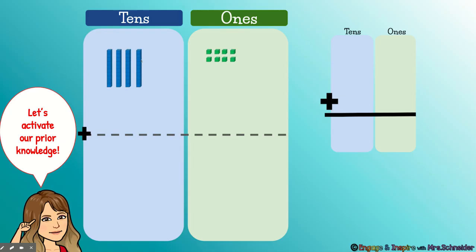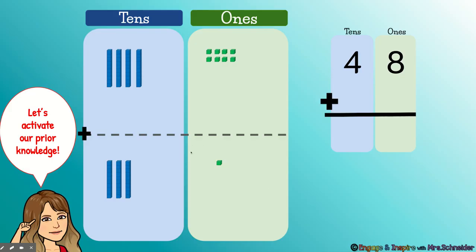We count the base 10 blocks: 10, 20, 30, 40, 41, 42, 43, 44, 45, 46, 47, 48. Then 48 plus 10, 20, 30, 1 — plus 31.